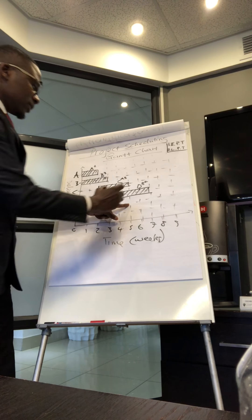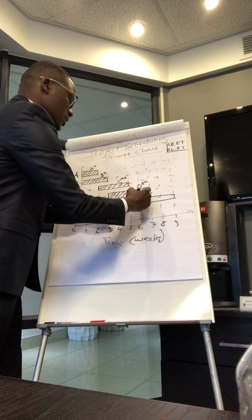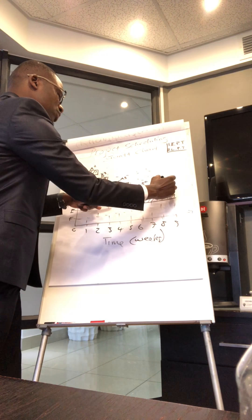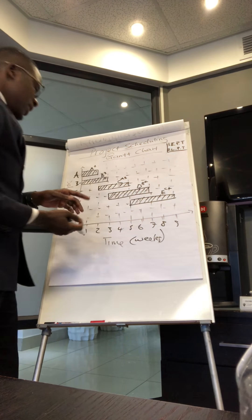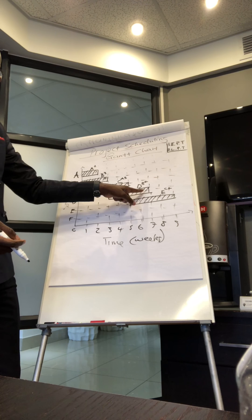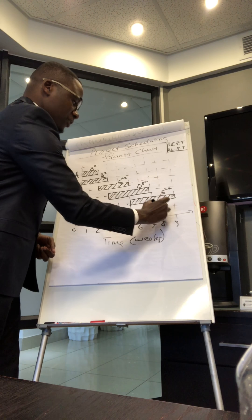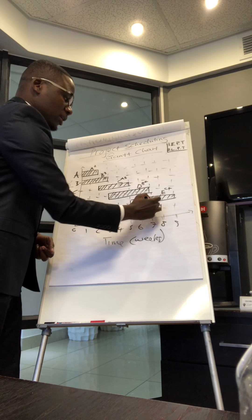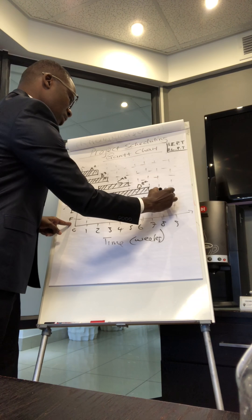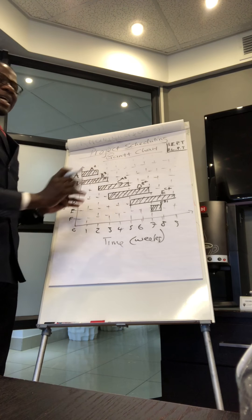Activity E cannot start until C is finished and takes four weeks, so we start from where C ends and draw four weeks. We call this Activity E depending on C, taking four weeks. Then Activity F, the last one, depends on D finishing and takes one week — we start from where D ends and draw one week. This is Activity F depending on D, taking one week. This is a Gantt chart.